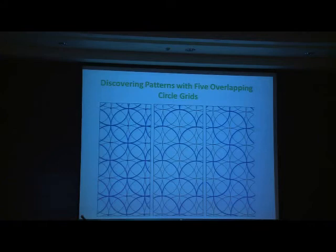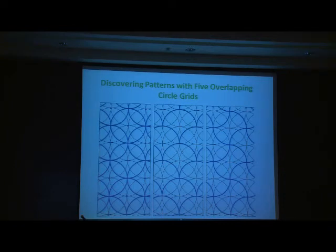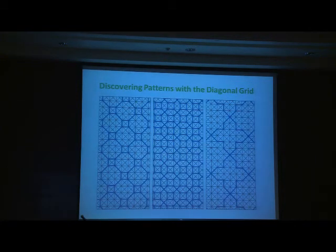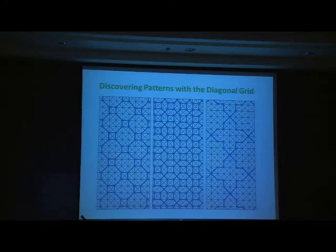People often think Islamic design just has straight lines, but that's not true at all. With five overlapping circles — one in the center and four around it — you can create the most exciting geometry. These are patterns you can create with a diagonal grid: diamonds, triangles, squares, octagons. The sky is the limit.